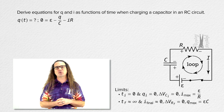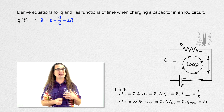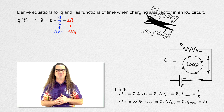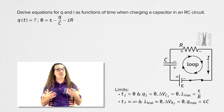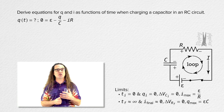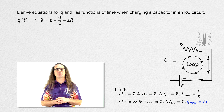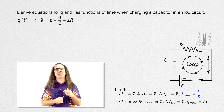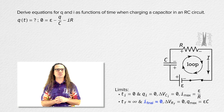Hello there. We have already used Kirchhoff's loop rule with this RC circuit to show that zero equals the EMF across the battery minus the electric potential difference across the capacitor minus the electric potential difference across the resistor. We have also already determined the limits: the initial charge on the capacitor is zero, the final charge is EMF times capacitance, the initial current is EMF divided by resistance, and the final current is zero.